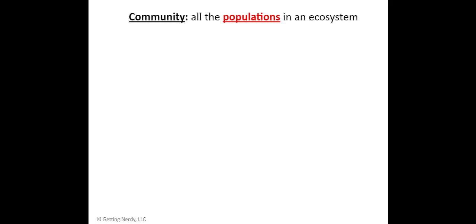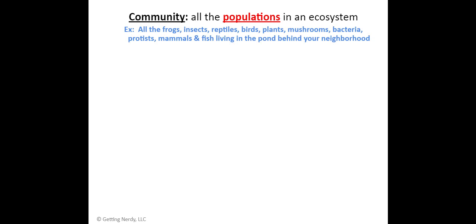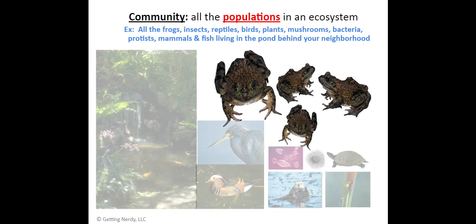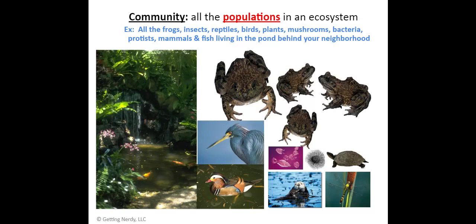When we go up a level, we have a community — all the populations in an ecosystem. For example, all the frogs, insects, reptiles, birds, plants, mushrooms, bacteria, protists, mammals, and fish living in a pond. Everything that is living is a community, but each species has its own population. There's one species of mosquitoes, one species of birds, one specific plant that only grows in that area — each is its own population, but all the living things together make a community in one area.